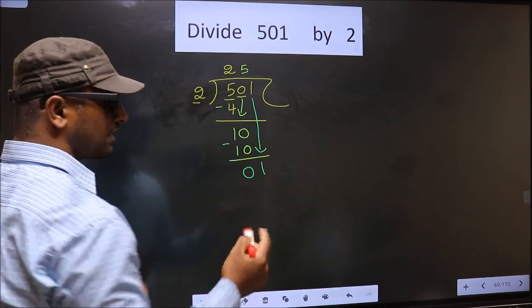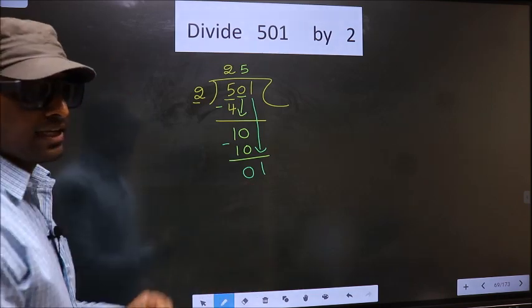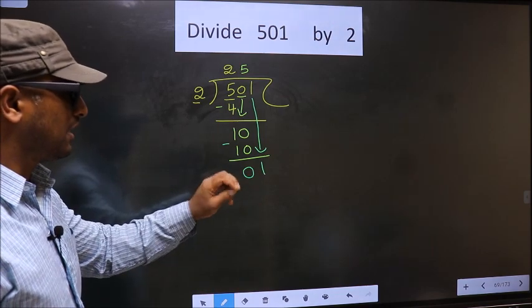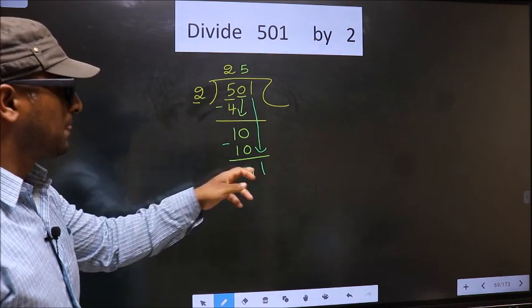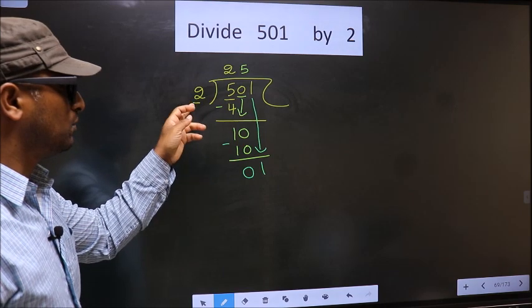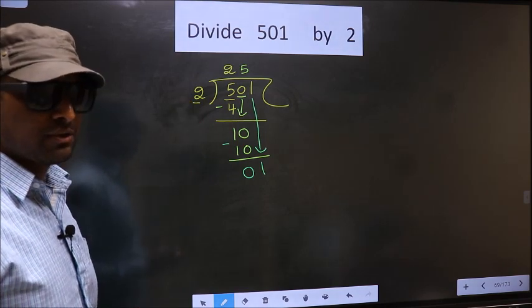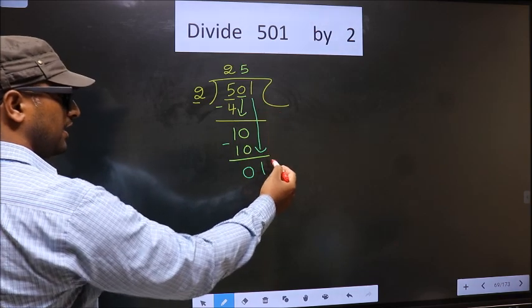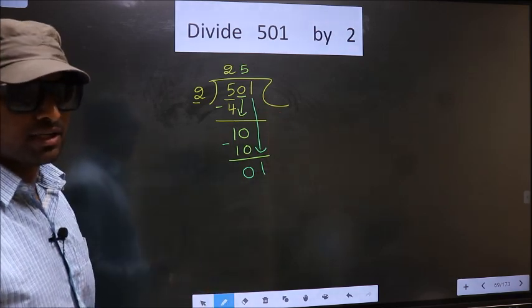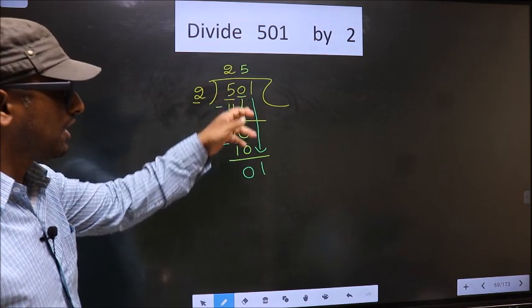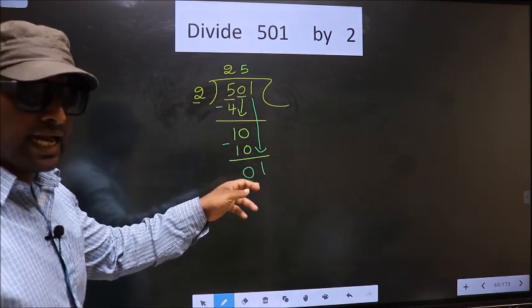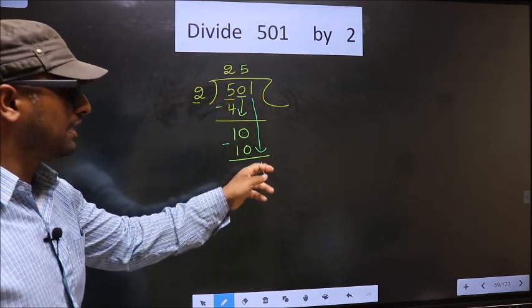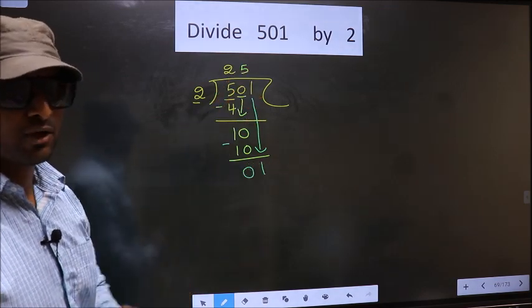This is where the mistake happens. And the mistake is this. Here we have 1. Here 2. 1 is smaller than 2. So what many do is they put a dot and take 0 here. Which is wrong. Just now you brought the number down. And in the same step, you want to put a dot and take 0 here. Which is wrong.